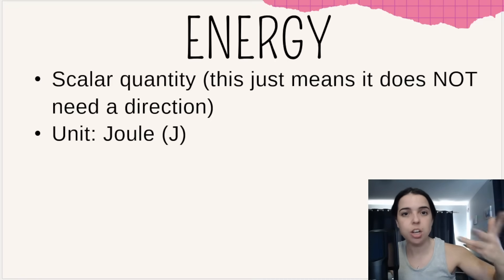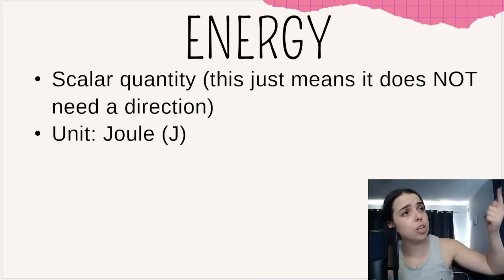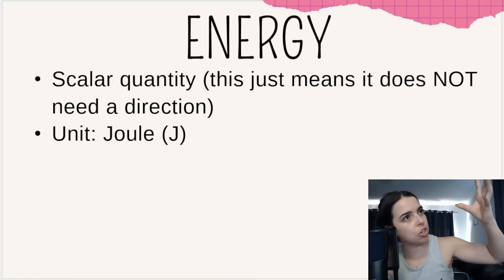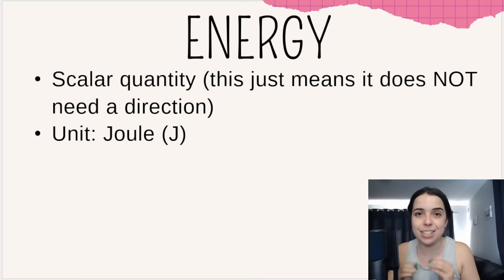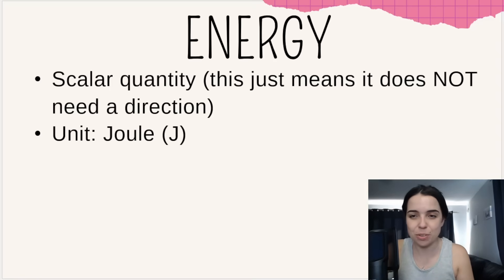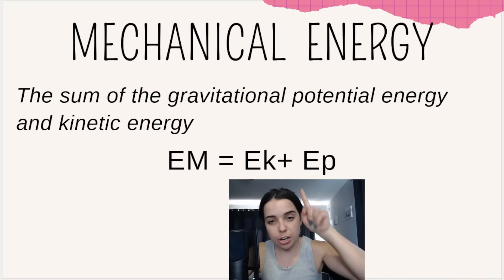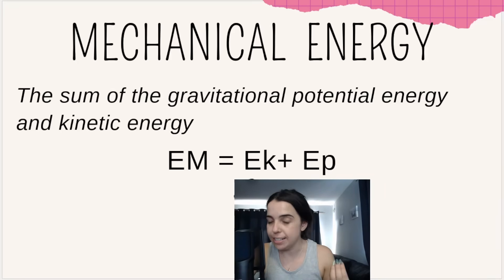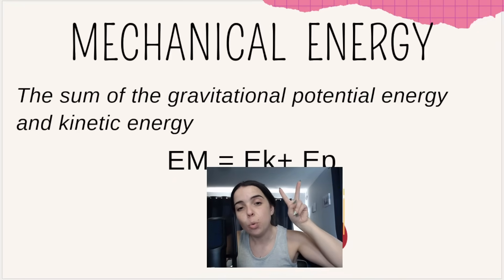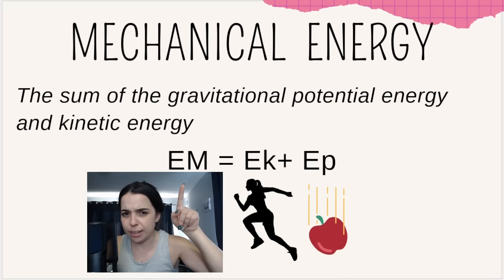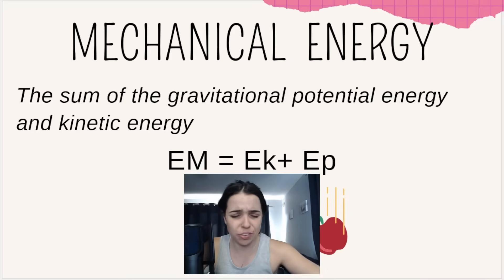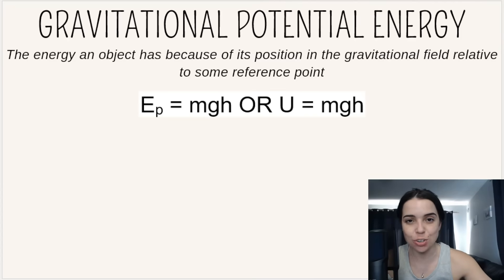Just like work, energy is measured in the unit called joules. For example, you might say an object has 30 joules of energy because of its position or because of its motion. Mechanical energy is the sum of gravitational potential energy — shortened to EP — and kinetic energy — shortened to EK. When you add these two energies together, you get mechanical energy.